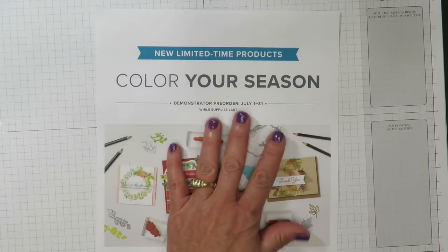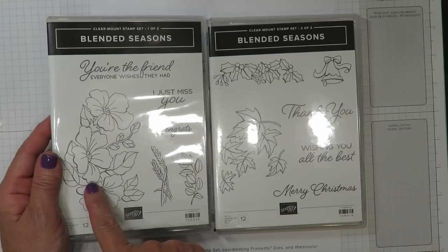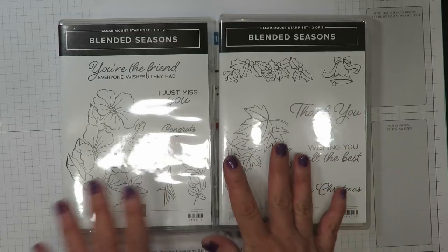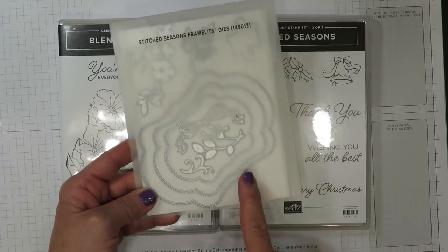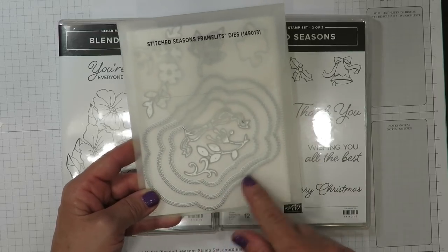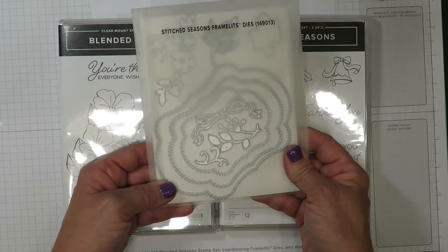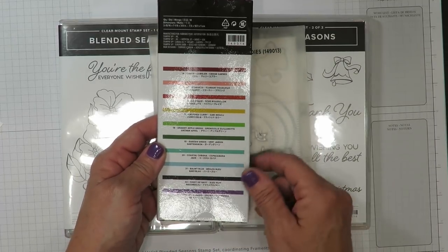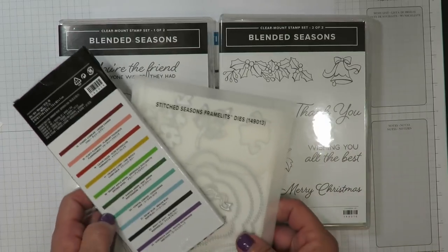The Color Your Season promotion includes a beautiful stamp set. There's a large variation of images to take you from all occasion cards clear through the holidays. Now the stamp set can be purchased separately or you can choose to purchase it as a bundle. It has coordinating framelits. The one thing I love about these framelits is not only do they coordinate but they provide some extra pieces such as these stitched beautiful layered labels that we're going to be using today. Also part of the promotion is a brand new 10-pack of watercolor pencils.